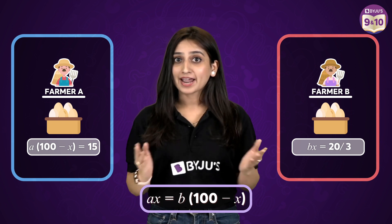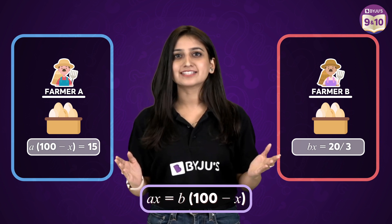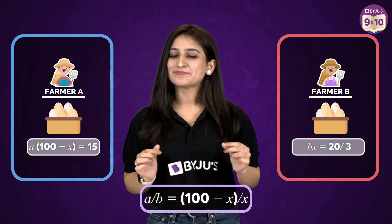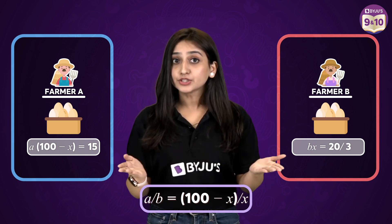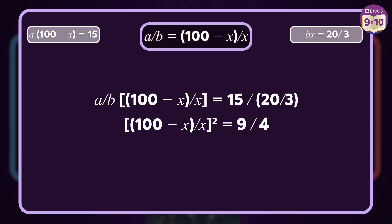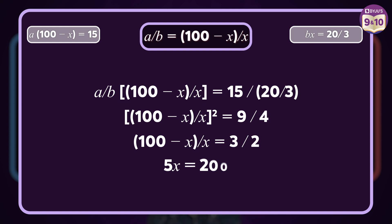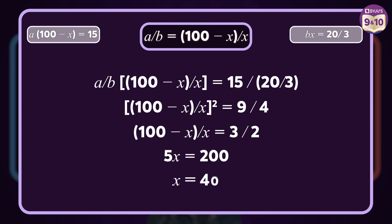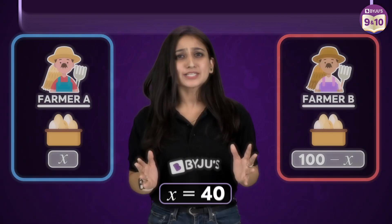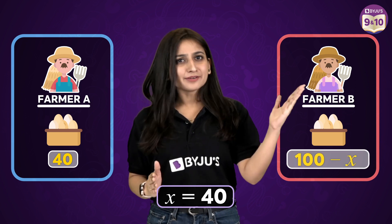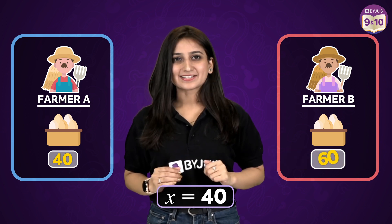Now solving for X in the first equation, we get A by B equals (100 minus X) by X. If we divide the other two equations, we get (100 minus X) by X equals 3 by 2. Solving that, we get X equals 40 — this is what A sold. And B sold 100 minus X, that is 60 eggs.